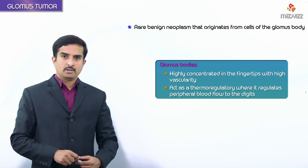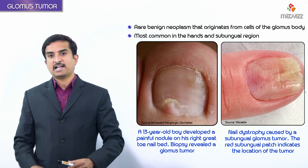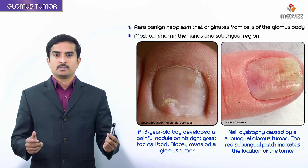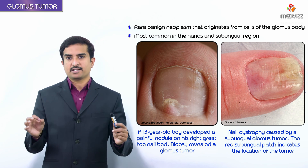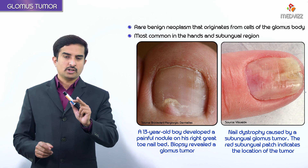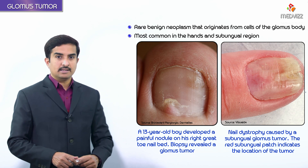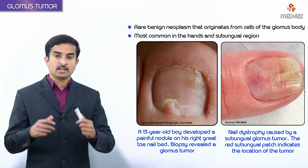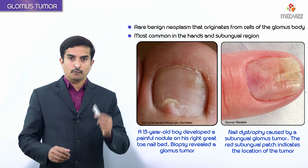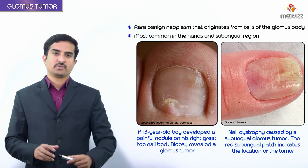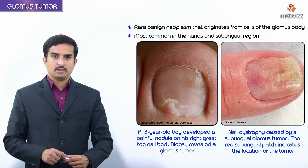The glomus bodies regulate peripheral blood flow to the digits, so not surprisingly, glomus tumors are most commonly seen in the hands and the sub-ungual region — meaning beneath the nail. These tumors are located in areas of the skin rich in glomus bodies: the sub-ungual regions of the digits, the deeper dermis of the palm, wrist, forearm, and foot.